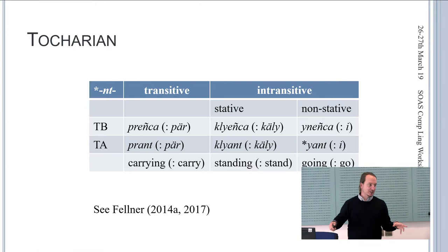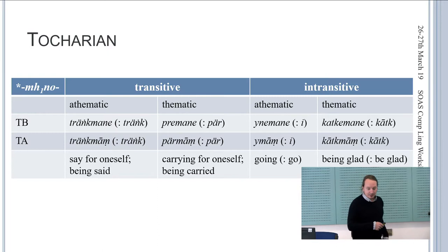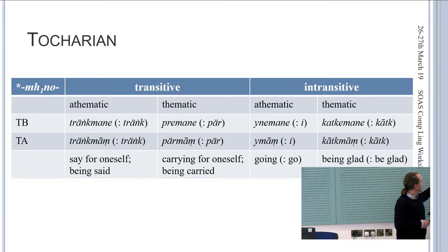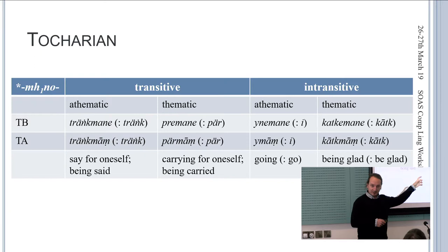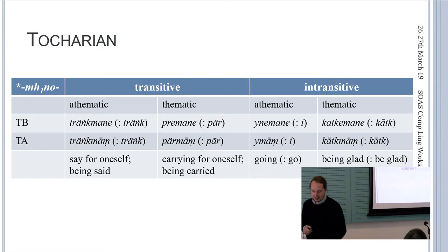We have far more attestations of Tocharian B mchno participles than Tocharian A. For the mchno forms: trinkmane/trinkman from trink 'say for oneself, being said'; premane/pyrman 'caring for oneself, being carried'; jenemane/jeman with finite passive or medial inflection 'going'; and katkemane/katkman 'being led' from the root. These all correspond nicely to mediopassive finite verbs.